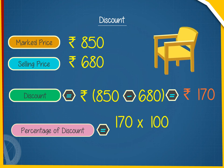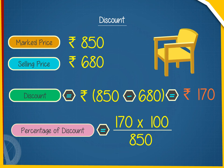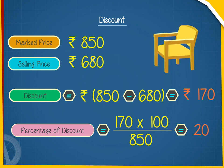Percentage of discount equals 170 into 100 upon 850 equals 20%.